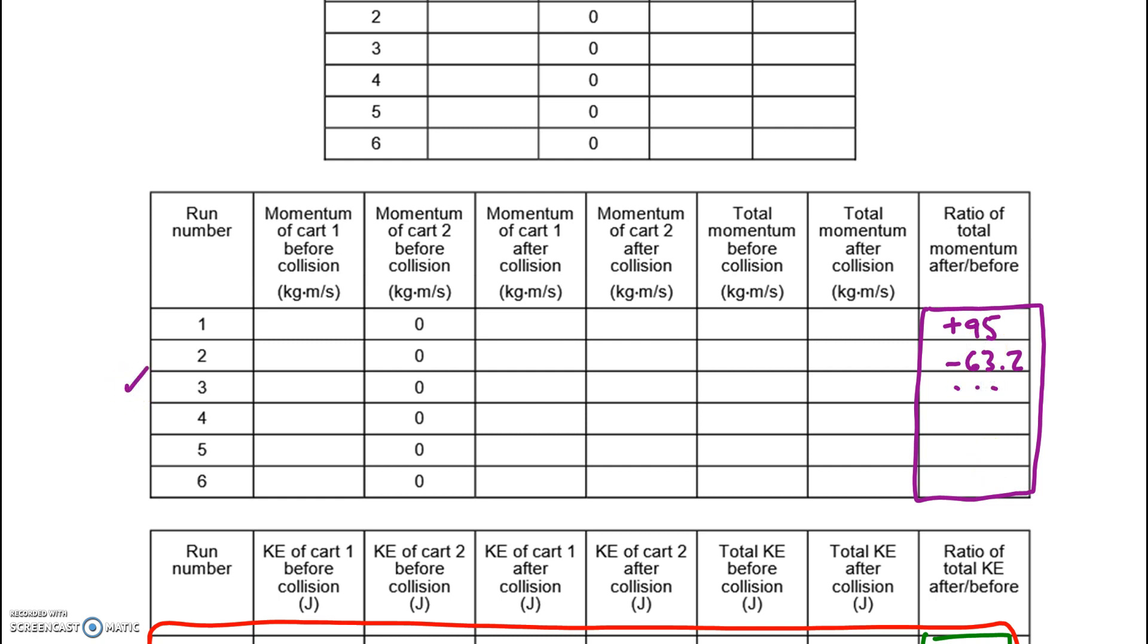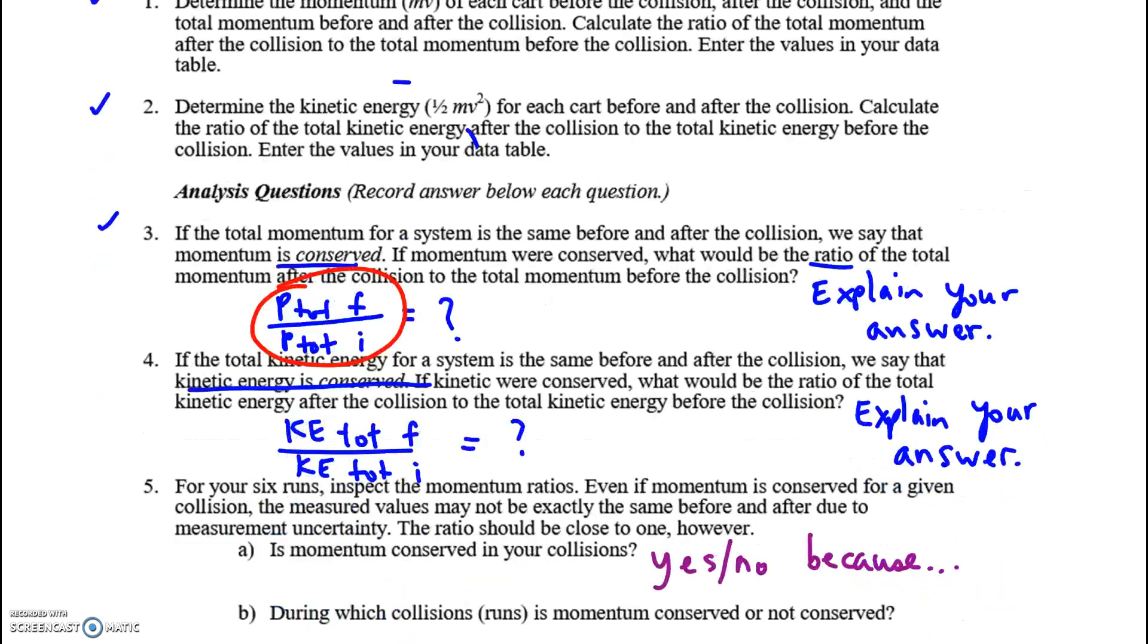you know, in trial three, you say, yes, I found one where there was conservation of momentum. Maybe it appears in the last two as well. And you would say, on the whole, maybe momentum's not conserved. Maybe because only half the trials had conservation,